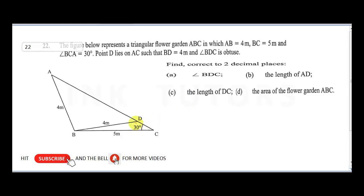This is angle BDC, and we are meant to know this is an obtuse angle. In order to find this, the best method we can employ is our sine rule.